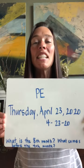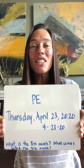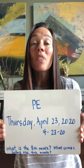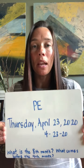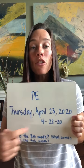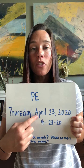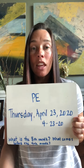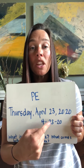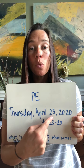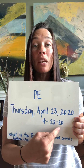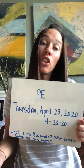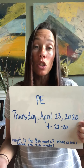Good morning, sweet friends. Today is Thursday, April 23rd, 2020. We know the 4 stands for the 4th month, we know 23 stands for the 23rd day of the 4th month, and we know 20 stands for the year 2020.